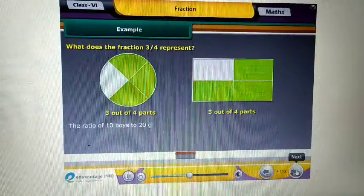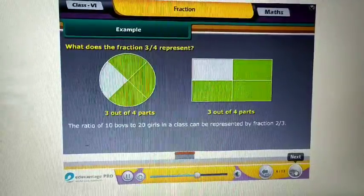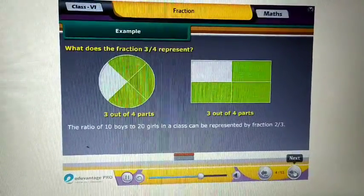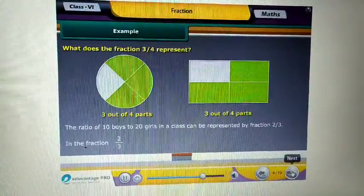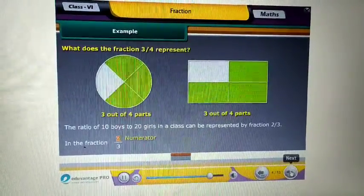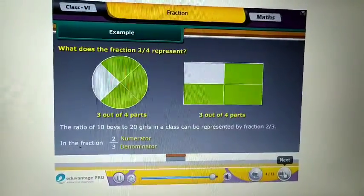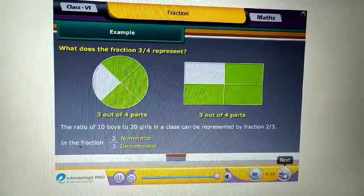The ratio of ten boys to twenty girls in a class can be represented by fraction two upon three. In the fraction two upon three, number two is called the numerator of the fraction and number three is called the denominator of the fraction.